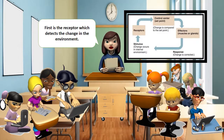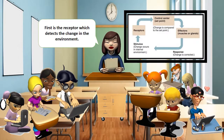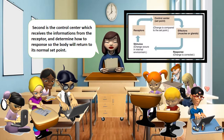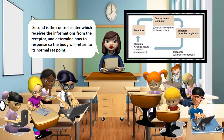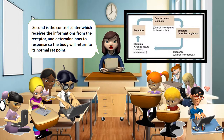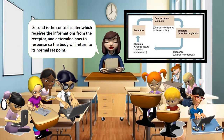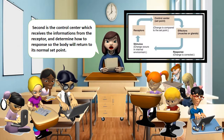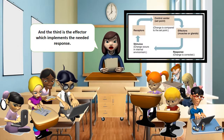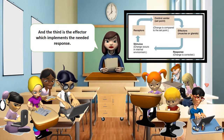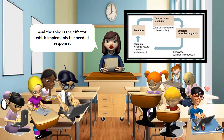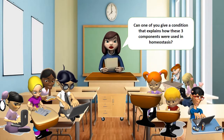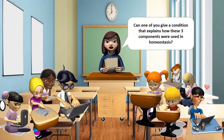First is the receptor, which detects the change in the environment. Second is the control center, which receives the information from the receptor and determines how to respond, so the body will return to its normal set point. And the third is the effector, which implements the needed response. Can one of you give a condition that explains how these three components were used in homeostasis?